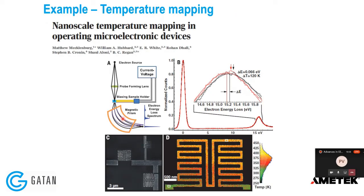Another example published in Science demonstrates measuring the temperature of a material using EELS. When temperature changes, the material expands or contracts, changing its density, and you see a tiny shift in the plasmon peak by a fraction of an eV. Based on that, you can calibrate the plasmon peak position versus temperature and see how temperature changes down to the nanoscale — essentially using EELS as a nanoscale thermometer.